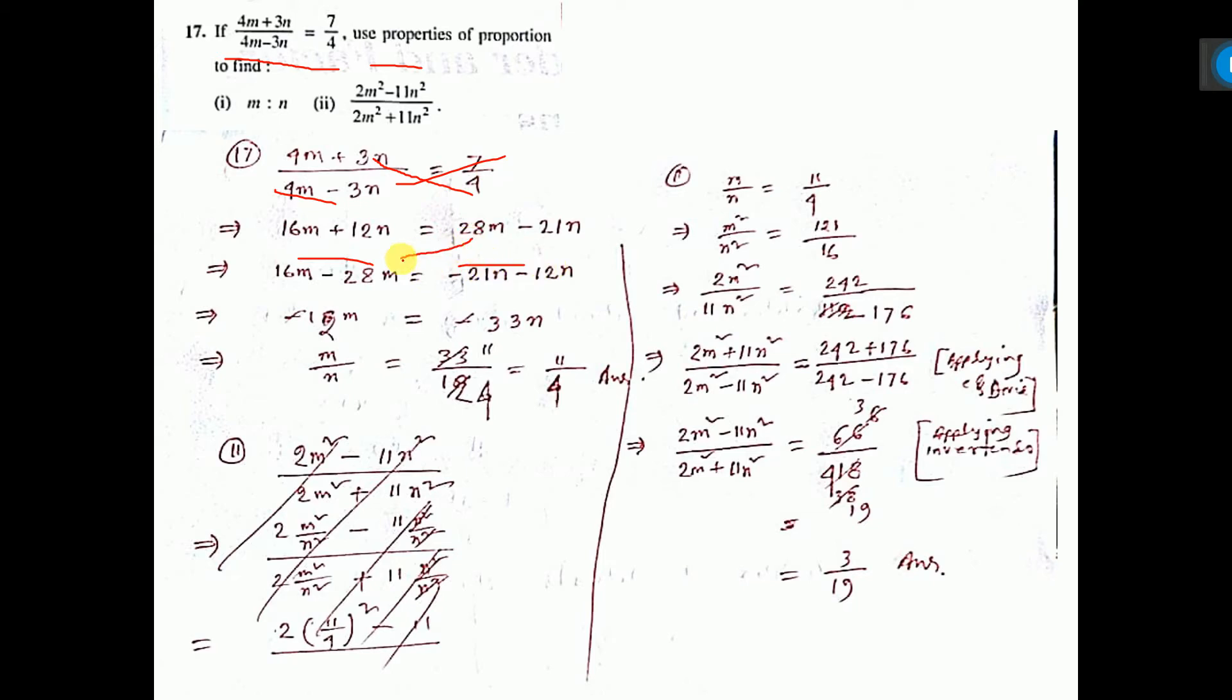M containing terms bring to the left hand side and N to the right hand side. After subtraction, here it is coming 12M. And here, after adding, it is minus 33N. Because same sign addition.